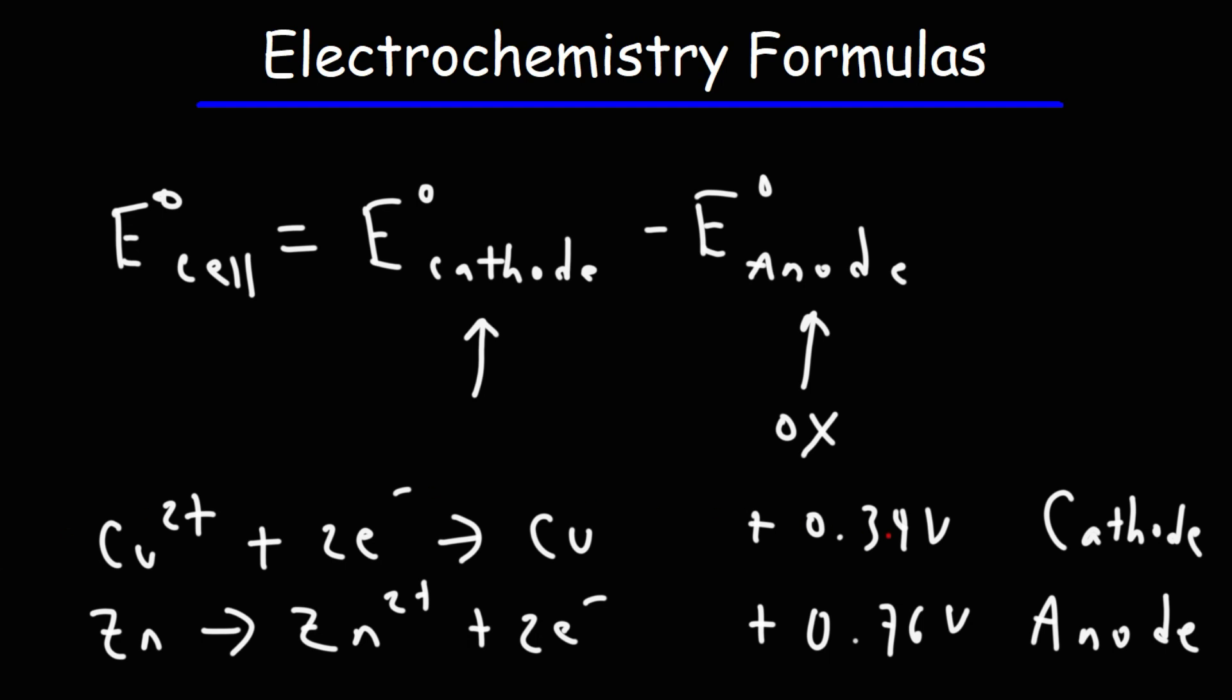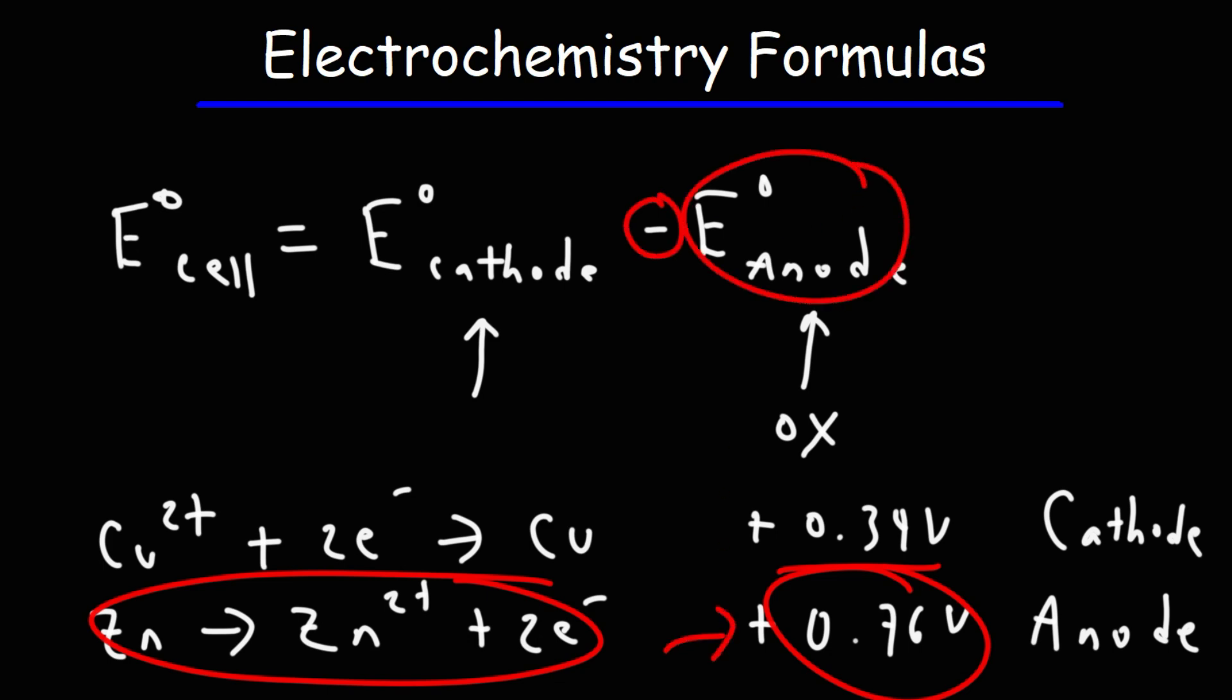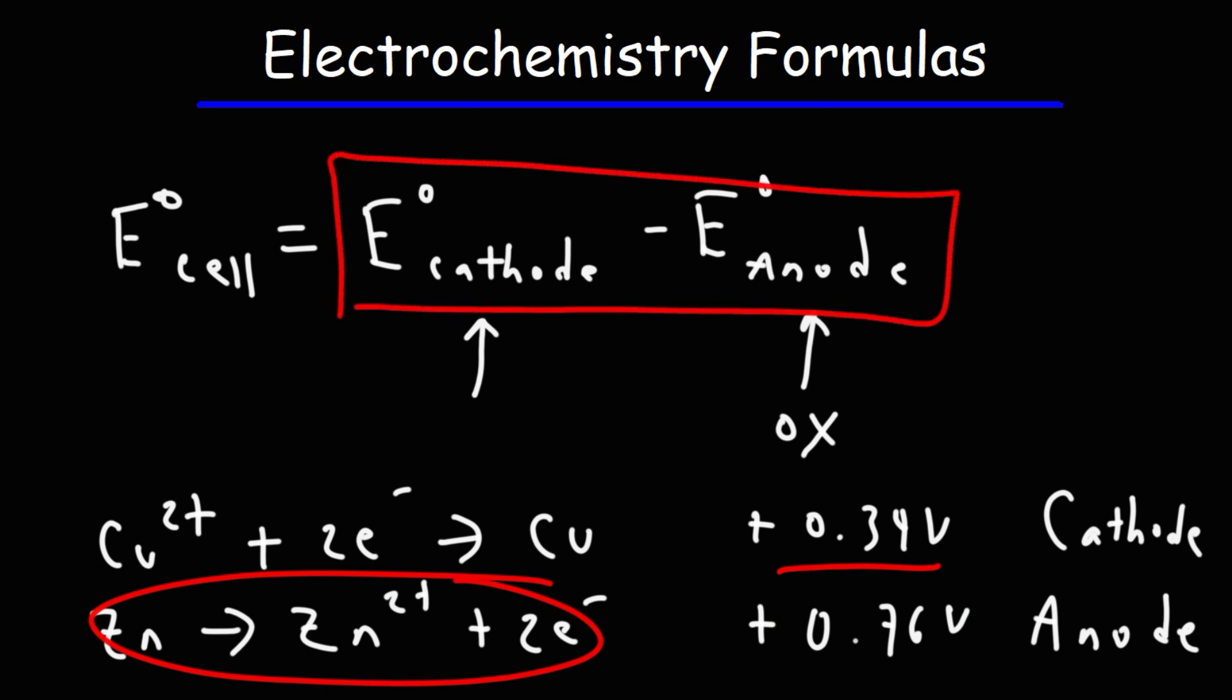Notice that the cell potential for the cathode was not reversed, so we just use a positive value for that. You'll see in the standard reduction potential table it's exactly like this. For the anode we had to change the sign. In the standard reduction potential you'll see this reaction written in reverse, but it'll be negative 0.76, so negative and negative 0.76 will make it positive 0.76. That's why this equation is written this way - you need to reverse the reaction for the anode if you're using the values in the standard reduction potential table.